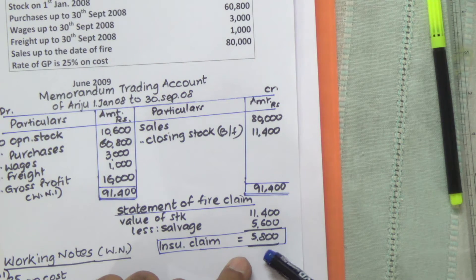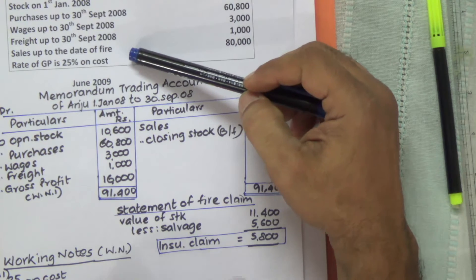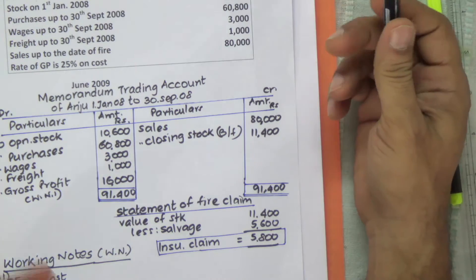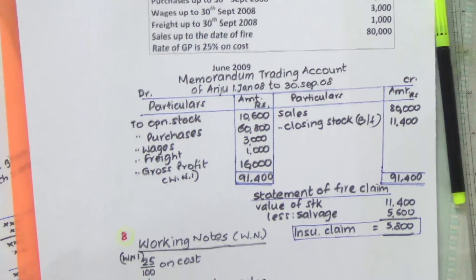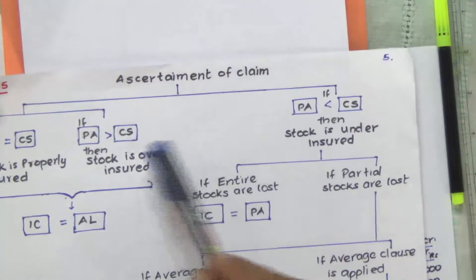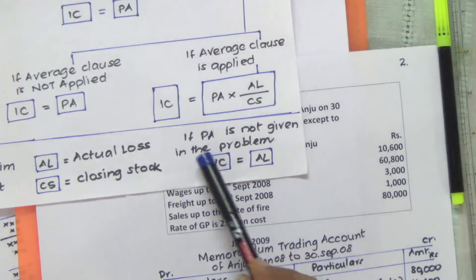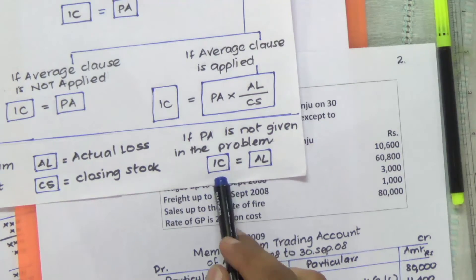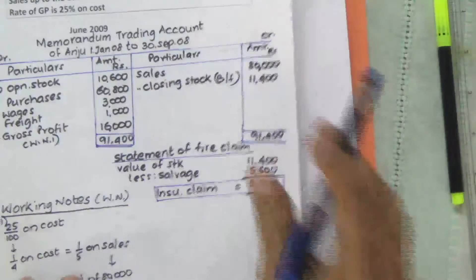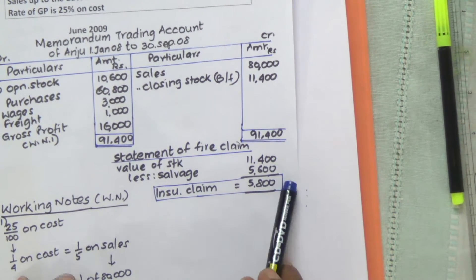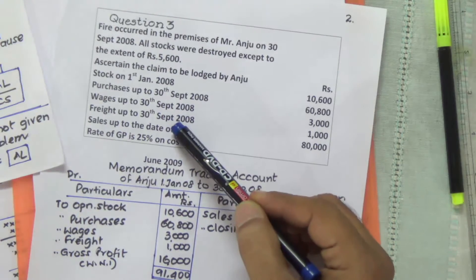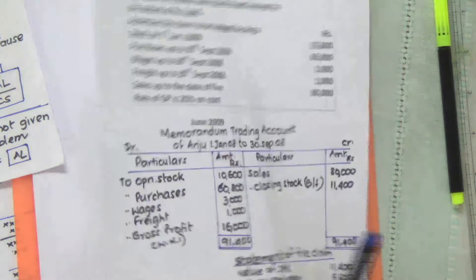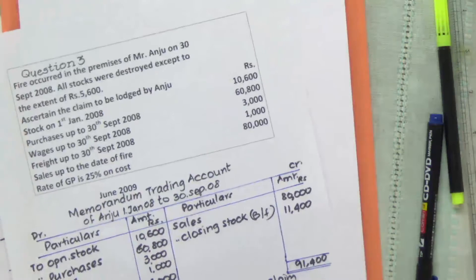The insurance claim is the actual loss. The actual loss is 5,800 — that's the insurance claim. The problem nowhere mentions the policy amount and nowhere talks about average clause. Policy amount is silent. If policy amount is not given in the problem, we have a rule: insurance claim equals actual loss. This rule is covered on page 5 in the ascertainment of claim section. Because nothing is mentioned about the policy amount or average clause, actual loss equals insurance claim. With this, we'll move on to Sum number 4.